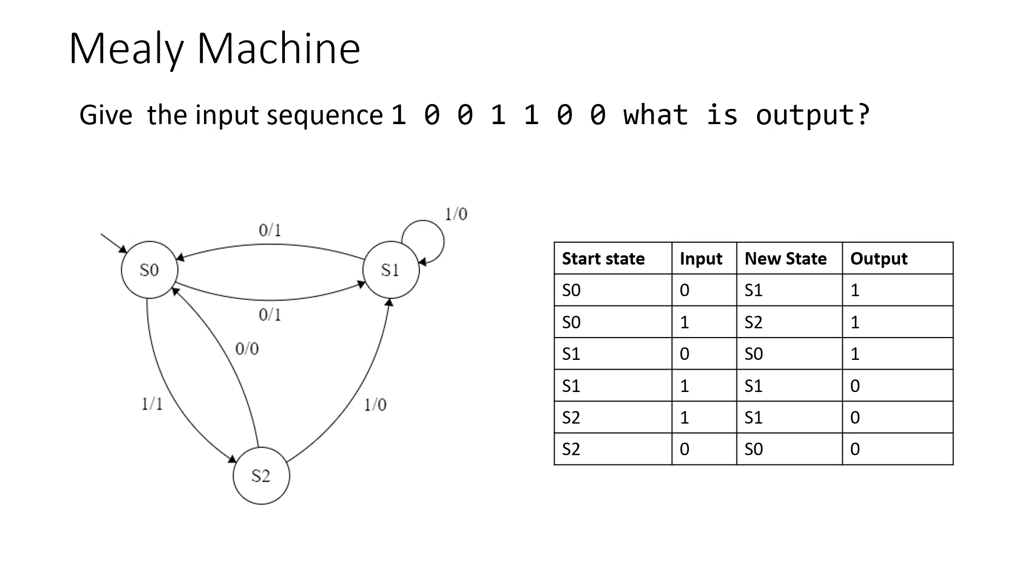I'm going to talk about Mealy machines. Now Mealy machines are a type of finite state machine that have outputs on each transition and have no end state.